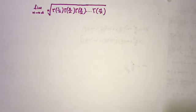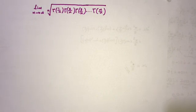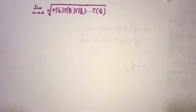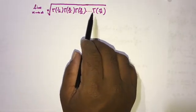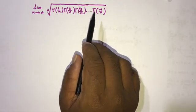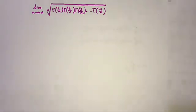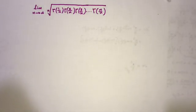Welcome to the Mathematics and My channel. Today we are going to solve another interesting limit question: the limit as n approaches infinity of the nth root of gamma(1/n) times gamma(2/n) times gamma(3/n), and the last term is gamma(n/n).